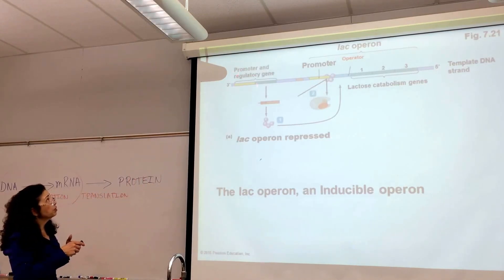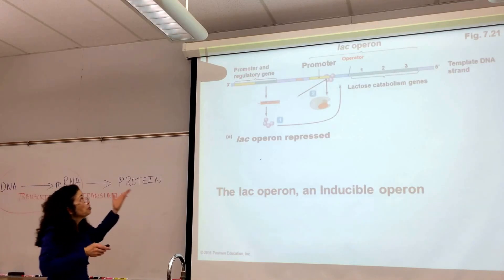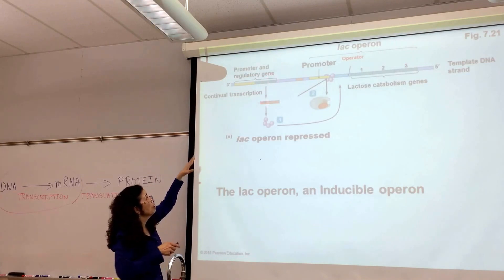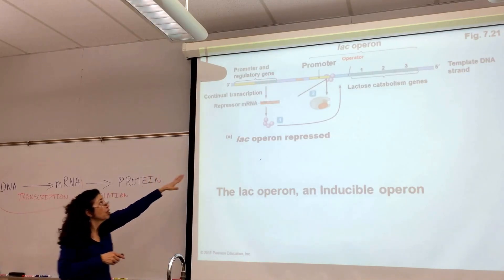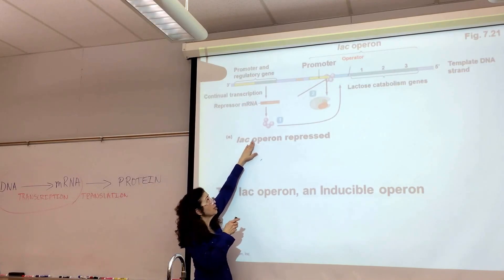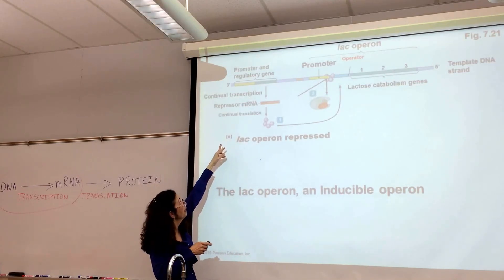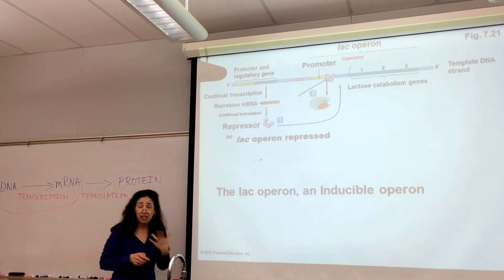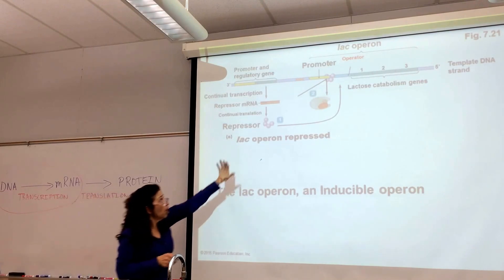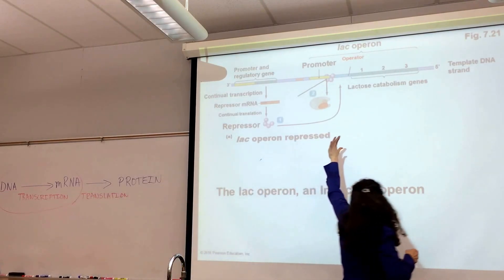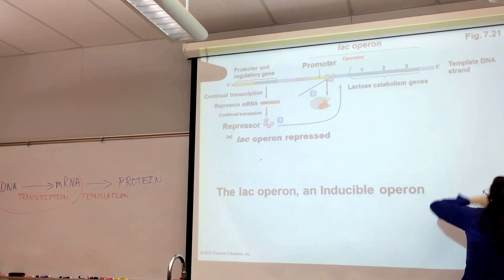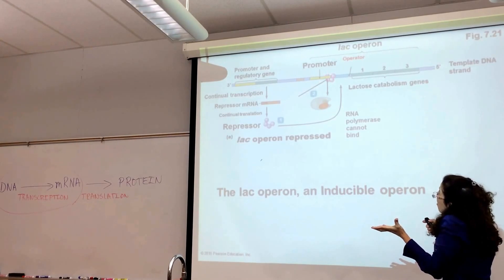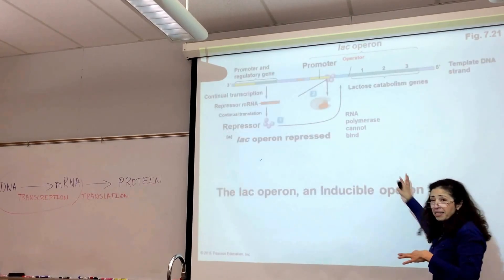The other component is the promoter and regulatory gene, which is transcribing that gene to produce a repressor mRNA, which in turn is going to be translated into the repressor. The repressor is physically going to attach to the promoter region of the lactose operon and block RNA polymerase from moving forward and carrying out transcription. RNA polymerase cannot bind because the area is already occupied.